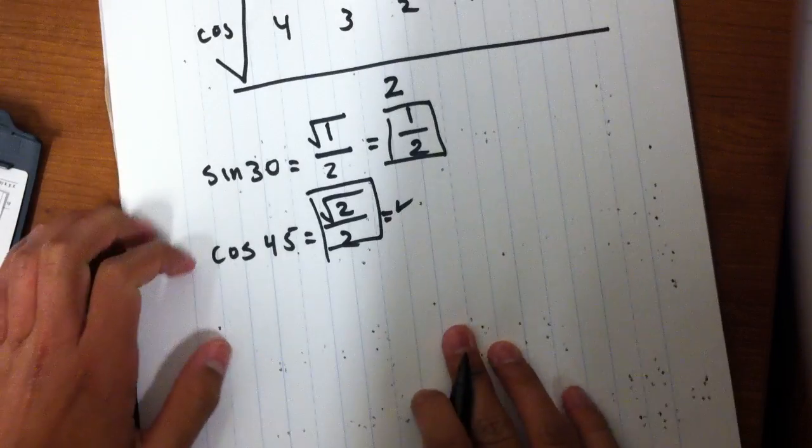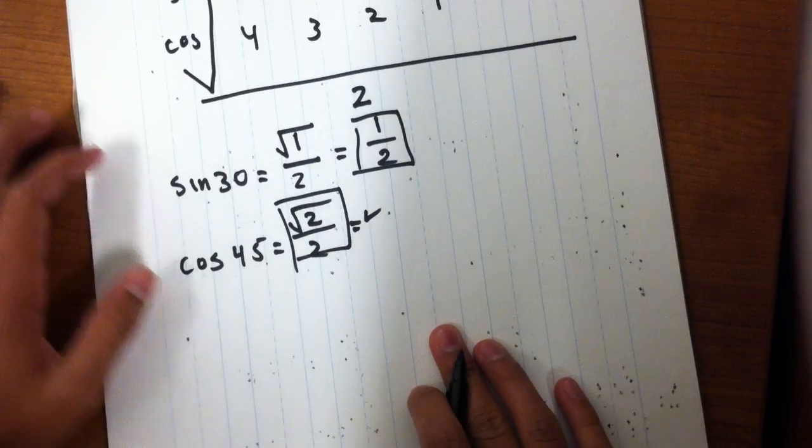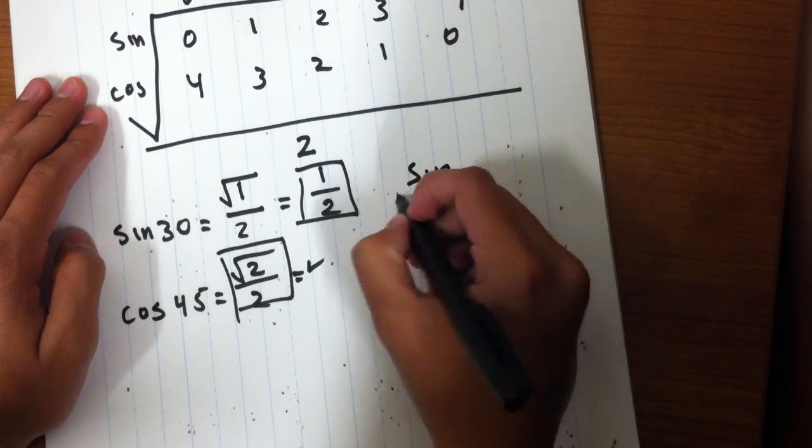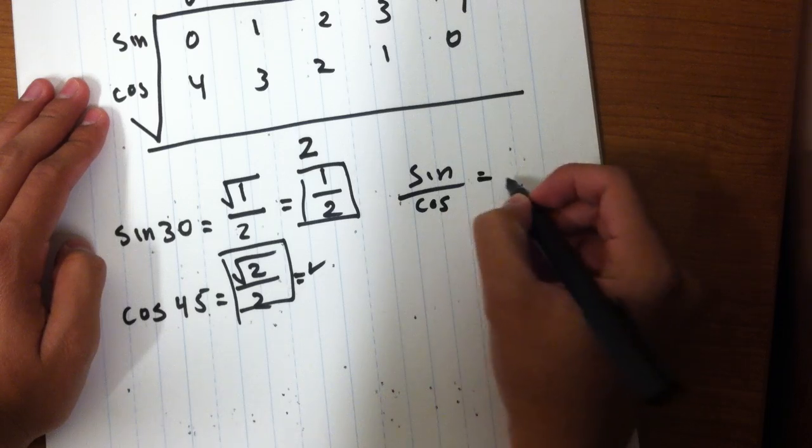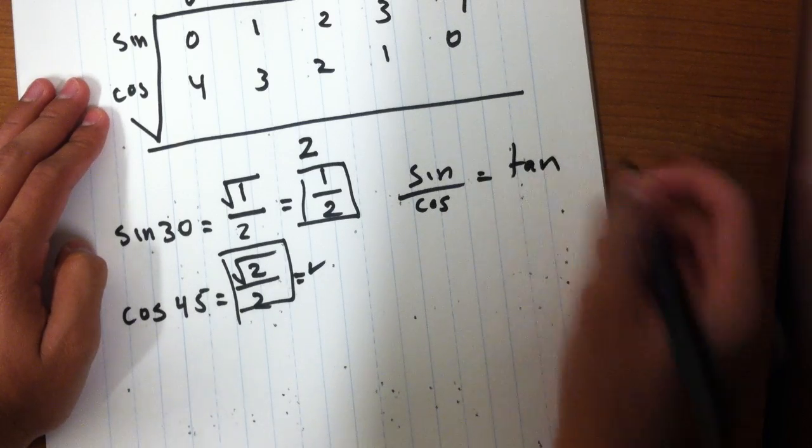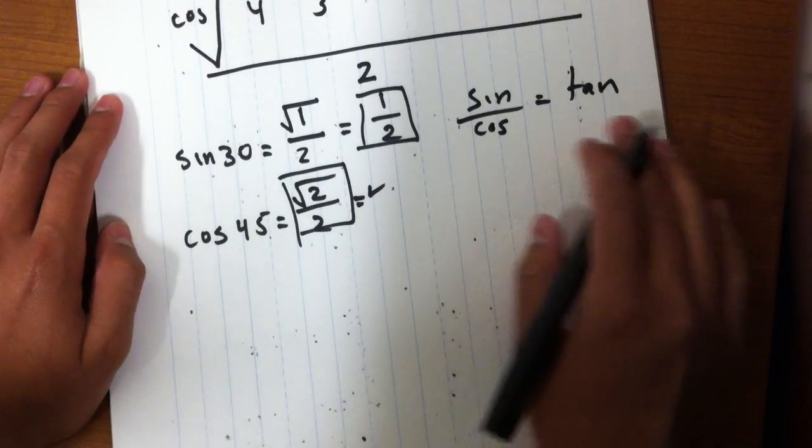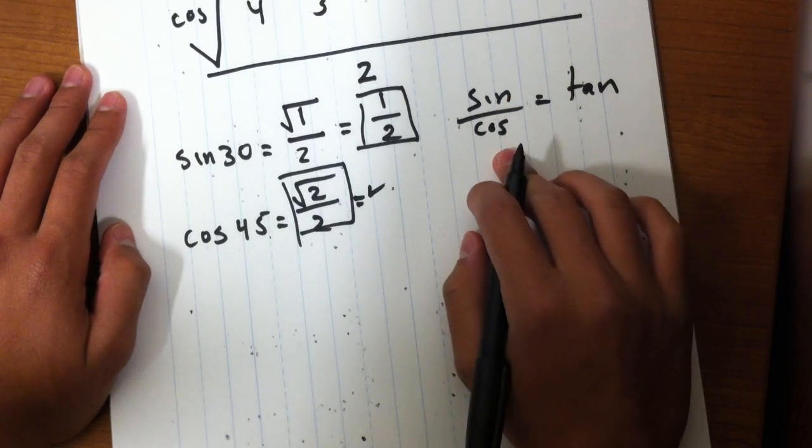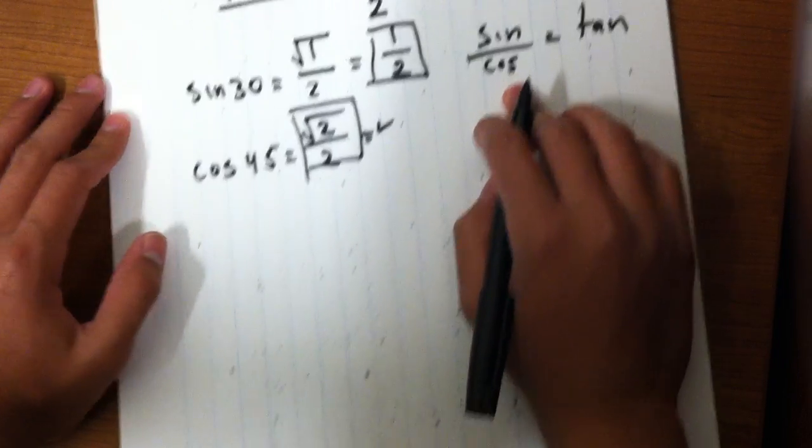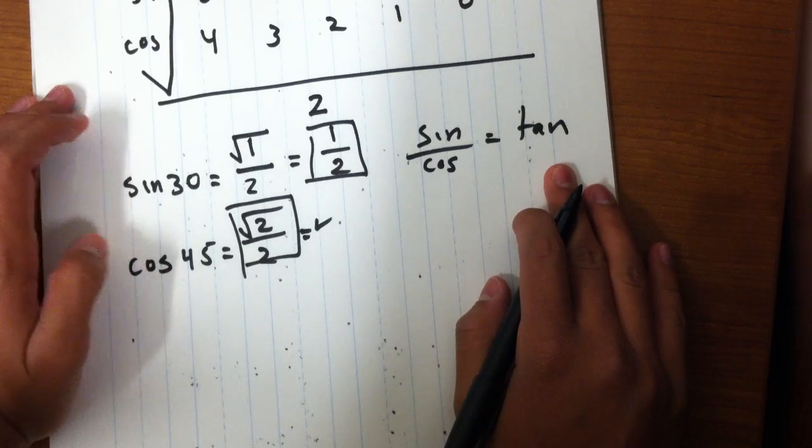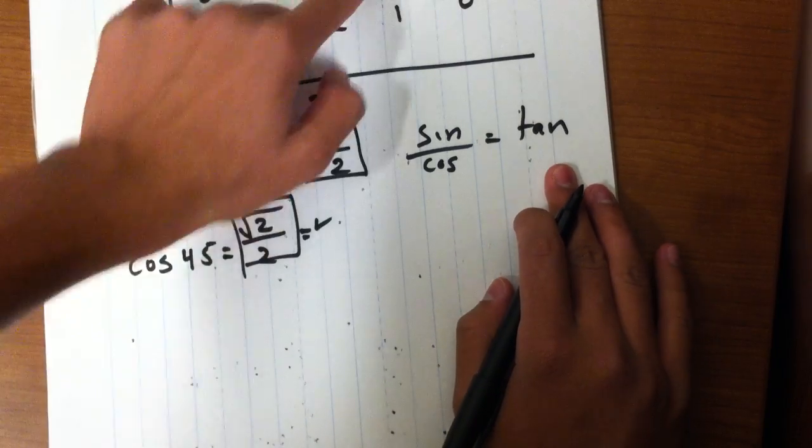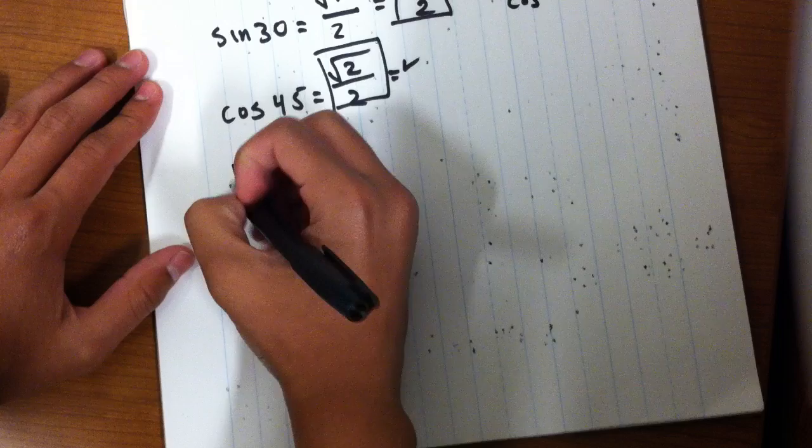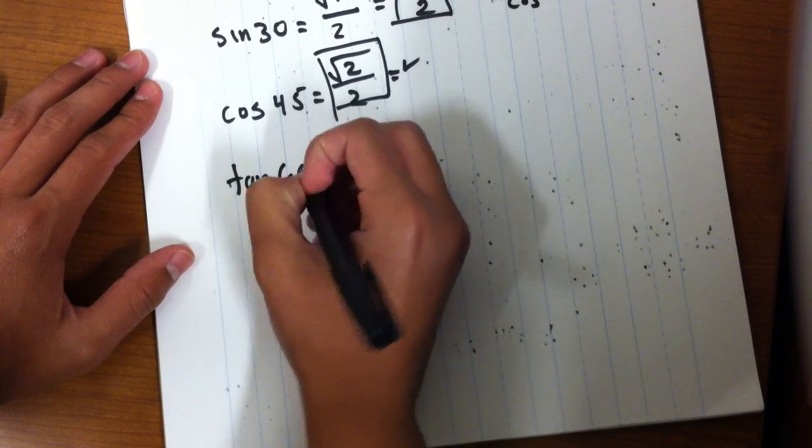Okay, so let's say you want to find tangents. We know that sine over cosine is going to equal tangent. So if we wanted to find tangent of a certain degree, we just have to find the sine of that degree and the cosine of that degree. Here's an example. Suppose we want to find the tangent of 60.